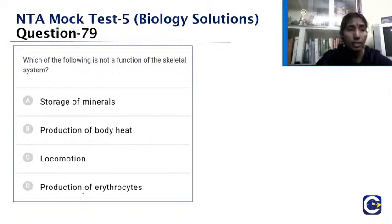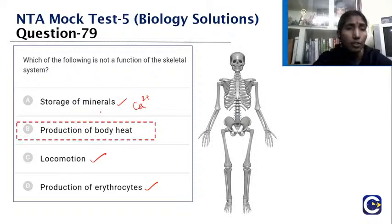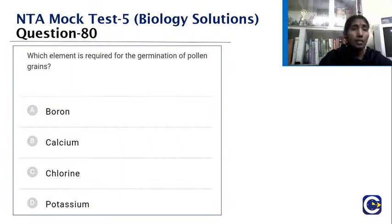Which of the following is not a function of the skeletal system — storage of minerals, production of body heat, locomotion, or production of erythrocytes? Storage of minerals (calcium, phosphate) — yes; locomotion — yes; production of erythrocytes by bone marrow — yes. Production of body heat is a function of the muscular system, not the skeletal system. The answer is production of body heat.